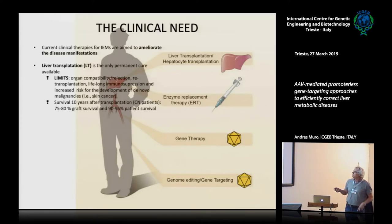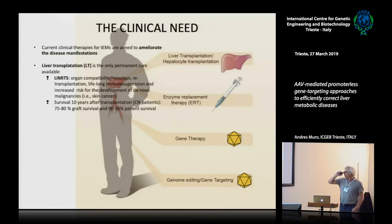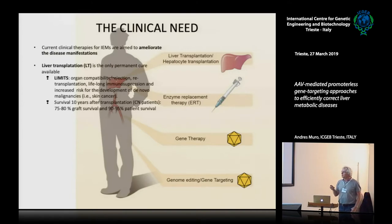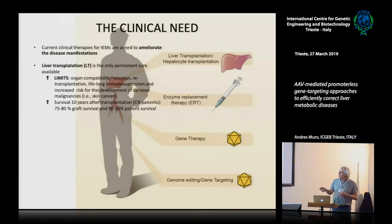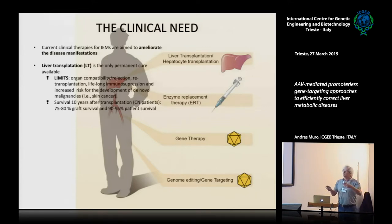Liver transplantation has many problems: organ compatibility issues, lifelong immunosuppression after transplantation, and increased risk of other diseases including cancer. In the case of Crigler-Najjar patients, in which the liver is absolutely normal, there is about 90–95% patient survival at five years, meaning 1 in 10 or 1 in 20 transplanted patients die from the procedure. And in many cases the organ must be re-transplanted, repeating the same problems.